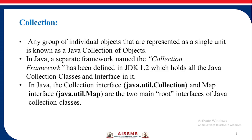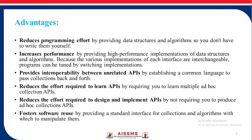Any group of individual objects that are represented as a single unit is known as a Java collection of objects. In Java, a separate framework named the Collection Framework has been defined in JDK 1.2, which holds all the Java collection classes and interfaces in it. The Collection interface java.util.Collection and the Map interface java.util.Map are the two main root interfaces of Java collection classes.